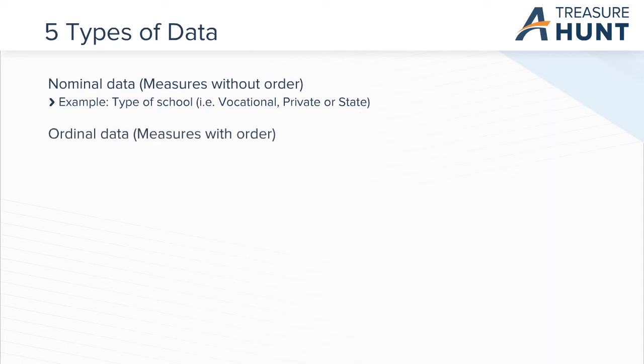Ordinal data measures with order. It indicates that the measurement classifications are different and can be ranked in particular order. The letter grading system like grades A, B, C, and D could be a good example of ordinal data, because the values follow an order of importance.